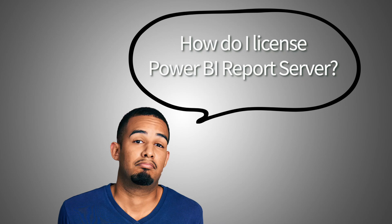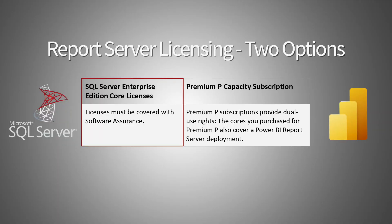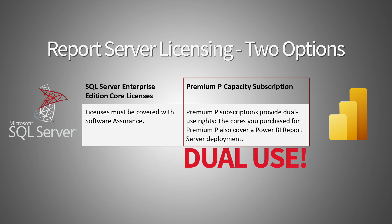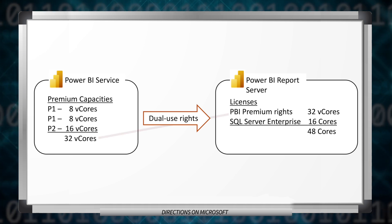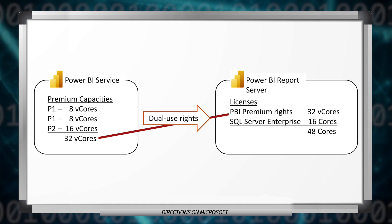The last question is: how do I license Power BI Report Server? There are really two options. First, we can use SQL Server Enterprise Edition core licenses, just like we do for Reporting Services — the only requirement is that the licenses must be covered with software assurance. The second option is a Premium P capacity subscription. Premium P subscriptions provide dual use rights that allow you to use the cores you purchase for Premium P to also cover a Power BI Report Server deployment. For example, if you've purchased 32 virtual cores for Premium P for a cloud deployment, you can also use those same 32 virtual cores to cover an on-prem deployment — true dual use rights. That would be a great scenario in a hybrid environment to control cost.